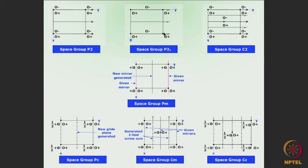A screw axis rotates and at the same time translates along itself. From the group of atoms attached to this lattice point, we will produce another group at 180 degree rotation, but at the same time translated by half a lattice parameter along the y direction. Similarly, the group attached to this lattice point will produce another group at 180 degrees, and this group will produce another group further along — and it will continue.